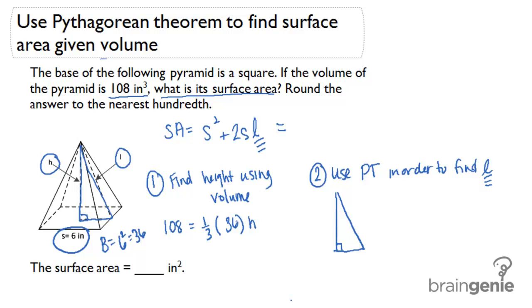So if I want to find the height of this pyramid, I would do one third times 36 is 12. So I have 108 equals 12 times h. And then if I divide both sides by 12, I have h equals 9 inches. So the height of the pyramid is 9 inches. Now I'm going to use that 9 inches in my triangle to figure out the slant height. Remember that half of the side gives you the base of the right triangle. So that's why I wrote a 3 down at the base.